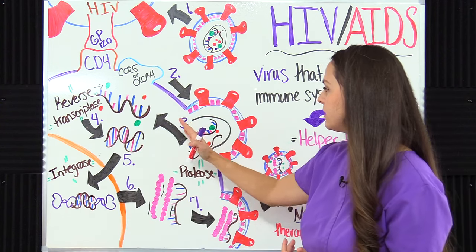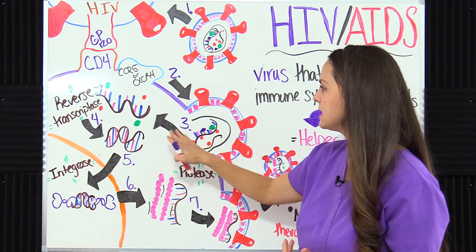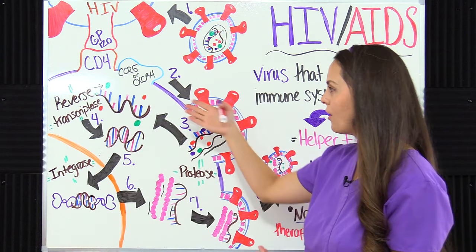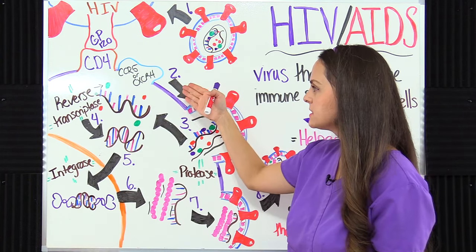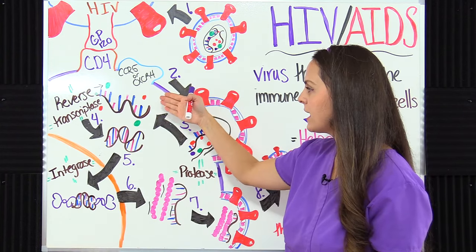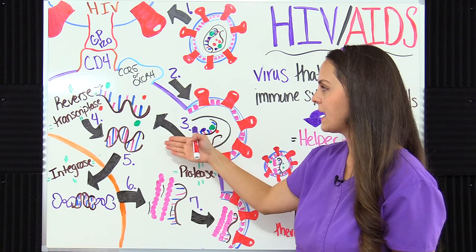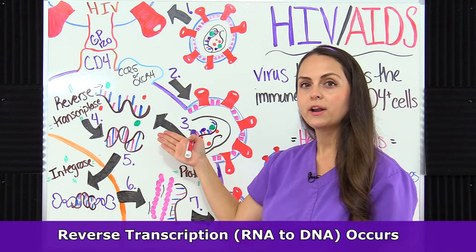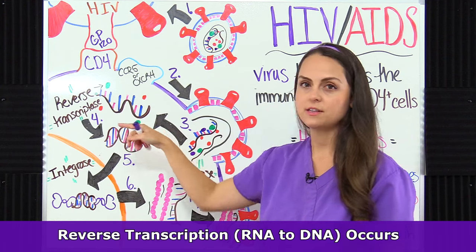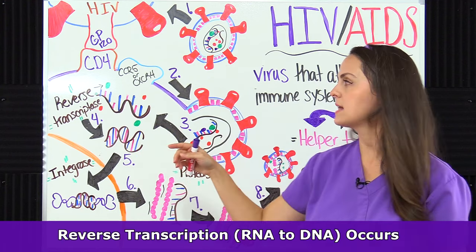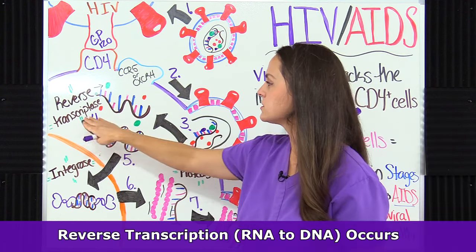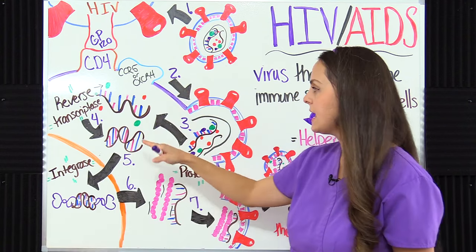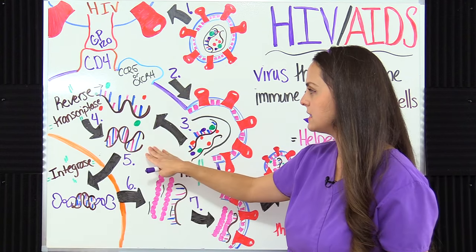Once this material is dumped in, we have our enzymes and our RNA. The RNA needs to turn into DNA, so the next step is reverse transcription: reverse transcriptase is going to turn that RNA into double-stranded DNA.